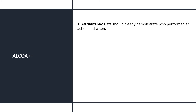The first letter, A, stands for Attributable. Attributable means data should clearly demonstrate who performed an action and when. Person traceability should be established — who performed the activity, when it was performed, and if there is any change in the record, who made the change and why.